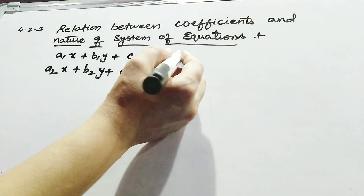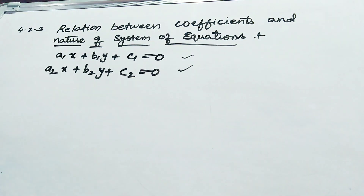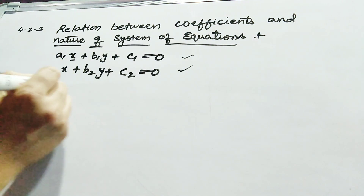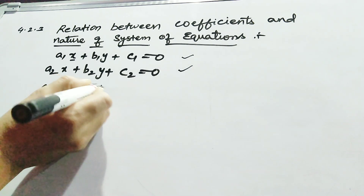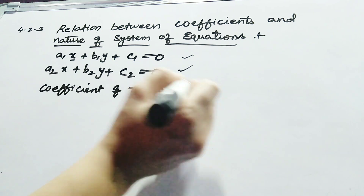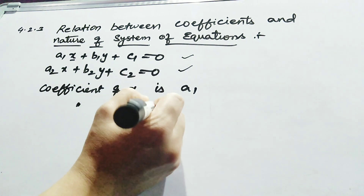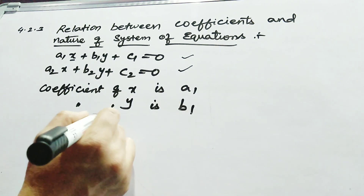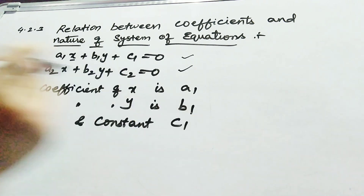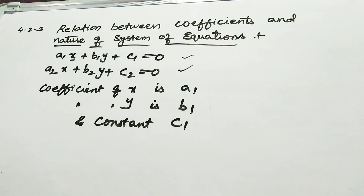For that, we are using the comparing ratios technique for pairs of linear equations. First, we have to obtain the equation in general form, then find out the coefficients. The coefficient of x is a1, the coefficient of y is b1, and the constant is c1. You have to remember the coefficients of the variables, because only then can you find out the nature of those equations — whether the equation is a consistent one or an inconsistent one.